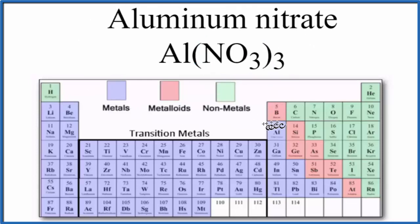When we look on the periodic table, we see aluminum here, which is a metal. And then nitrogen and oxygen, those are both nonmetals.